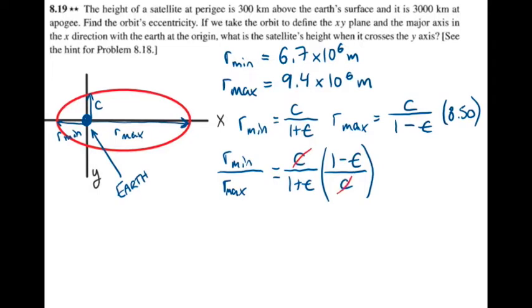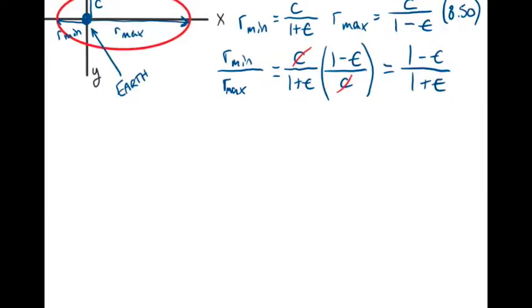rmin over rmax is 1 minus epsilon over 1 plus epsilon. We can go ahead and solve for rmin over rmax right now. It's equal to 0.713, the ratio of the radii.